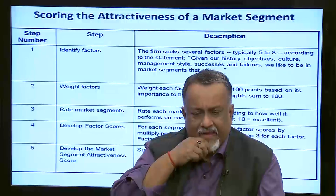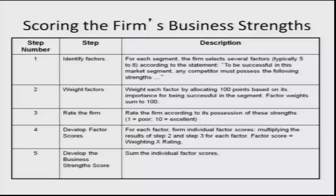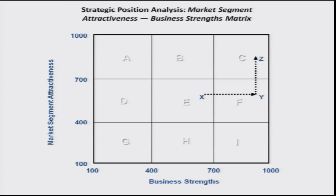For example, we may find that for a certain particular product range, we have a position somewhere on this chart where our business strength is something like 600 and our market segment attractiveness is also 600. Then our strategy will be how we will move from x to y to z in two steps — which means we would like to first improve our business strength, and having improved our business strength, we would then like to move to a market segment which is more attractive.